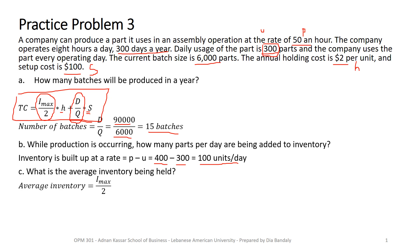I max is expressed in terms of Q. It's equal to Q times 1 minus demand rate over production rate. Everything is known for us now. So it's 6,000 times 1 minus 300 over 400. So that's 25% of the production quantity or the batch size. It's 1,500 units. So we'll proceed in the next slide.